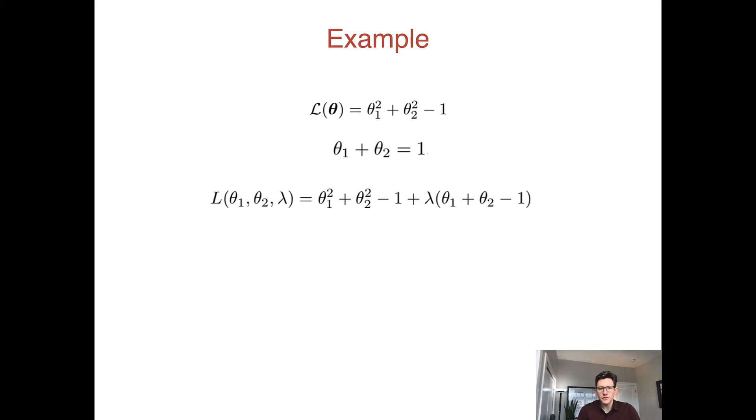We can form the Lagrangian from this. The Lagrangian function now also takes as input lambda, and it's our original function plus lambda times... Notice that we have to make our h function. We need something that we require to equal one, so we subtract one from both sides. Now this thing here, θ₁ + θ₂ - 1, is something that needs to equal zero.